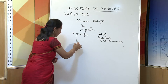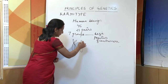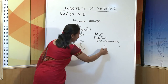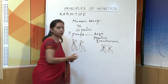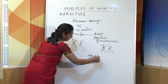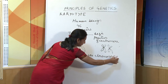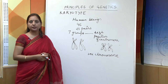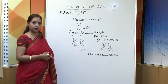Accordingly, these chromosomes are arranged from the biggest size to the smallest size, and the sex chromosome is kept at the last. When this type of arrangement is done, it is called karyotype, and this process is called karyotyping.